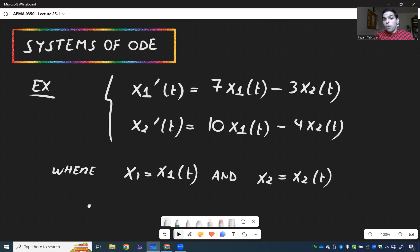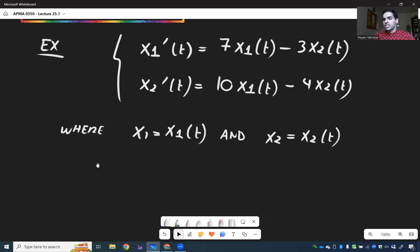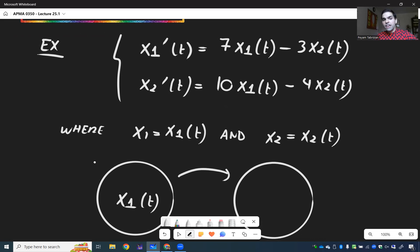Think, for instance, particles colliding with each other, like the sun and the moon, or just two quantities interacting with each other. So x1, the behavior of x1 depends on x2, and the behavior of x2 depends on x1.